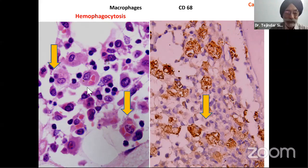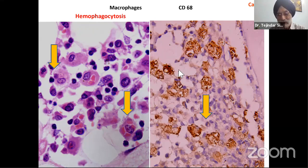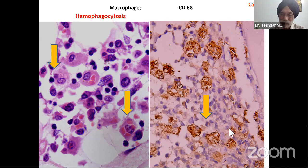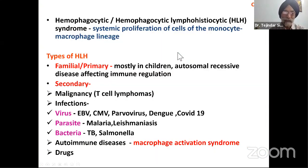The macrophages did show hemophagocytosis. This is a slide from another case where we came across hemophagocytosis, but on the bone marrow trephine biopsy the macrophages were not as clearly seen. To confirm, we carried out CD68 staining. This CD68 stain is showing a marked increase in macrophages, and some of the macrophages are showing hemophagocytosis. So the diagnosis is a case of hemophagocytosis. Are we dealing with HLH — hemophagocytic lymphohistiocytosis?